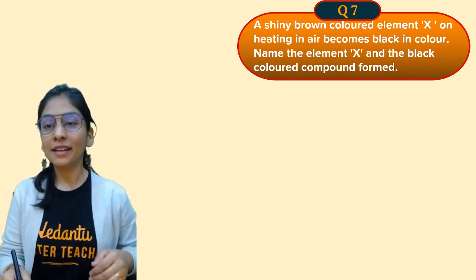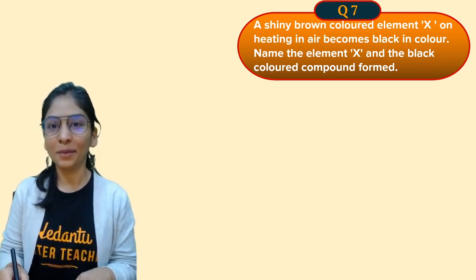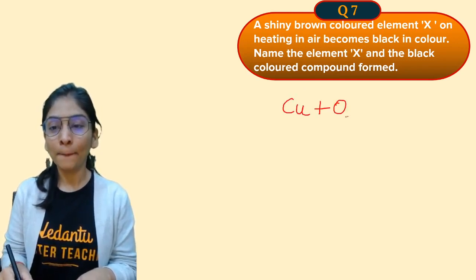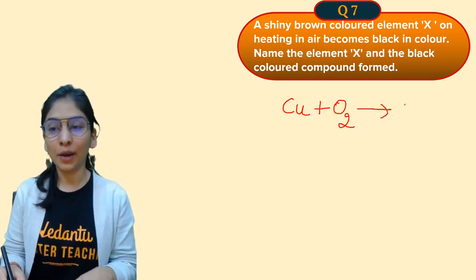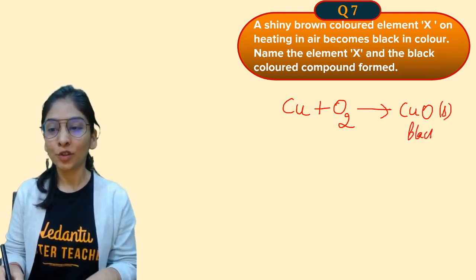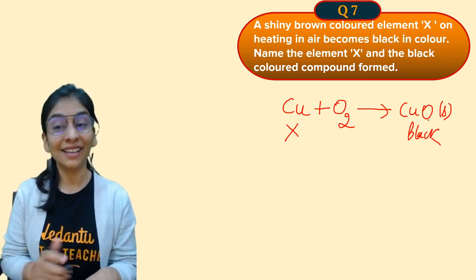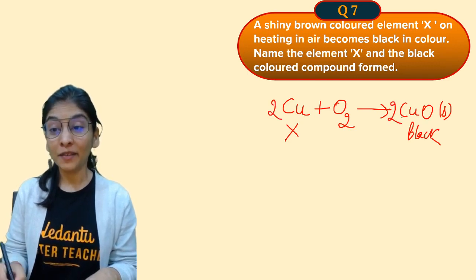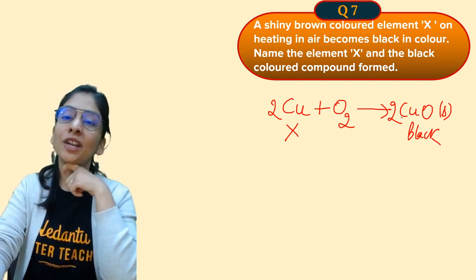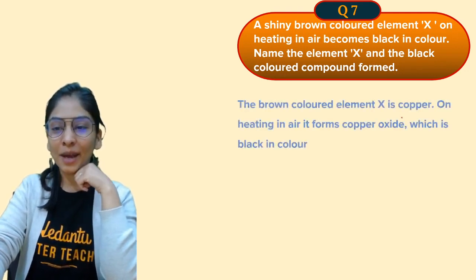Question: A shiny brown colored substance X, on heating in air, becomes black in color. Name element X and the black compound formed. Shiny brown metal is copper. When heated in air, a copper oxide layer forms on the surface, which is black in color. So X is copper, and the black compound formed is copper oxide. Write and balance the chemical equation for full marks.